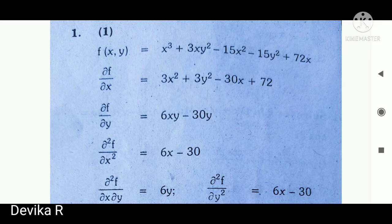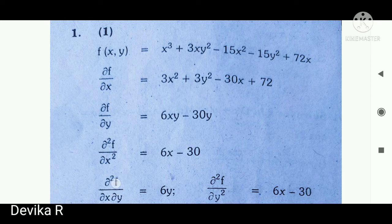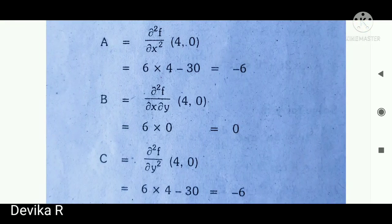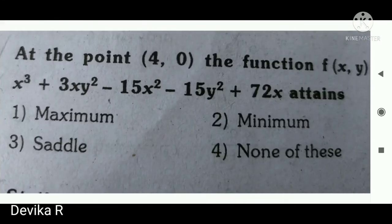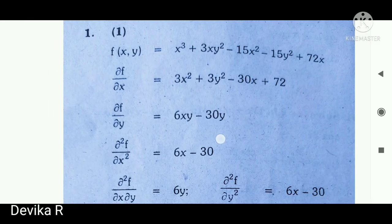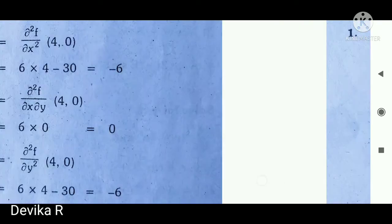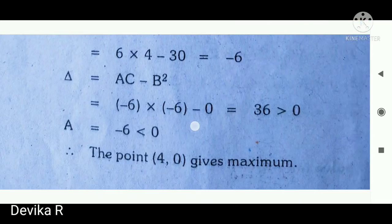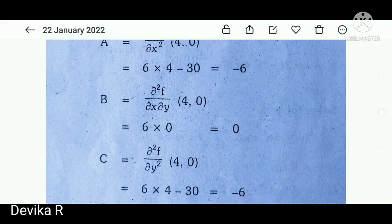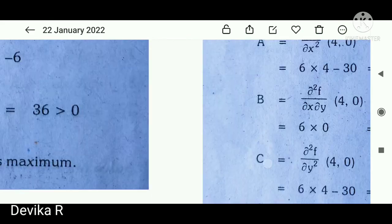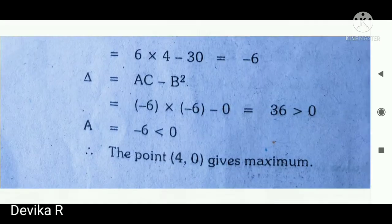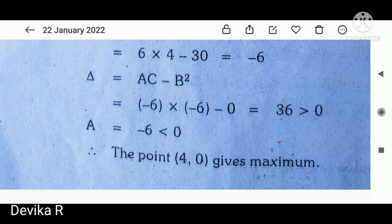First, find ∂f/∂x, then ∂f/∂y. Then find ∂²f/∂x², ∂²f/∂x∂y, and ∂²f/∂y² — these are called A, B, and C respectively. Then find AC − B². We substitute the given point (4, 0) into each second-order differentiated equation to get the values of A, B, and C.